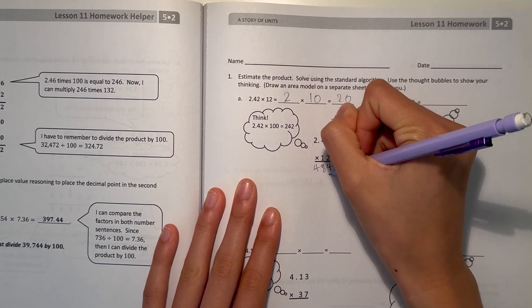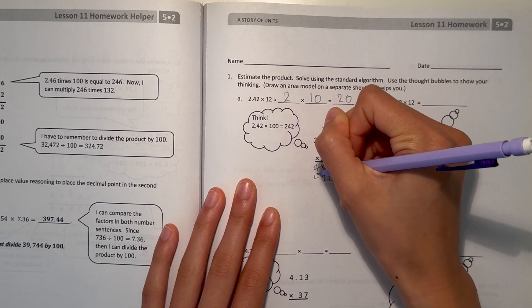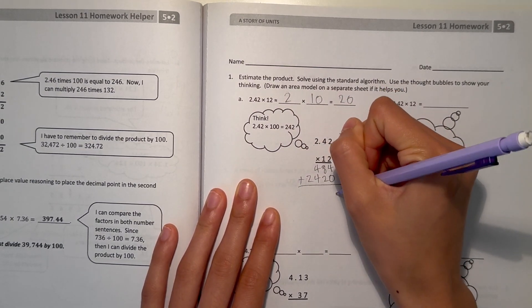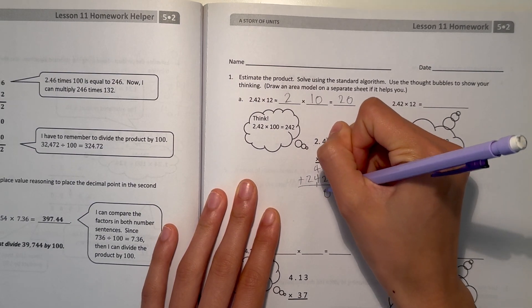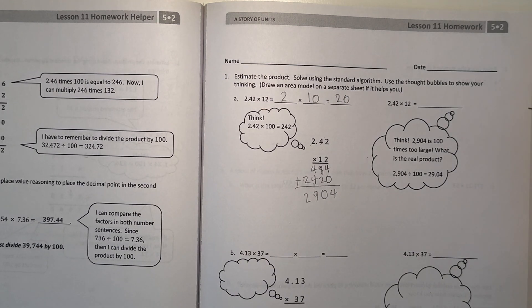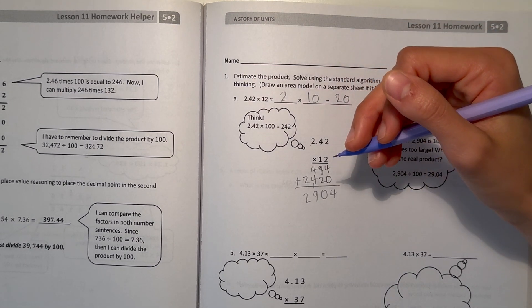Next row, add a 0 at the end. 1 times 2 is 2, times 4 is 4, times 2 is 2. And now we add: 4, 10, 9, 2. 2,904 would be the answer we get when we do 242 times 12.